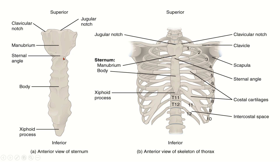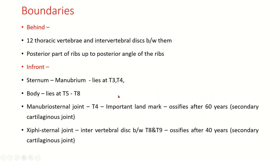Many structural changes are happening at the level of the sternal angle, which we will deal with when we discuss the mediastinum. This level also marks the junction between the superior mediastinum and inferior mediastinum. Posteriorly, the thoracic wall is formed by 12 thoracic vertebrae, and there are 12 pairs of ribs on either side along with costal cartilages.